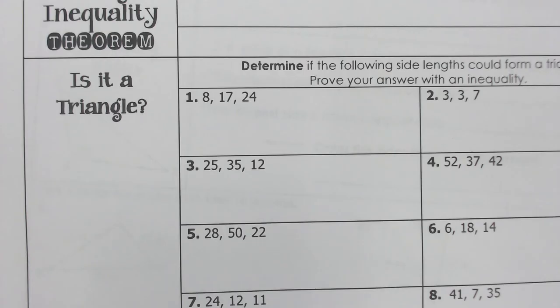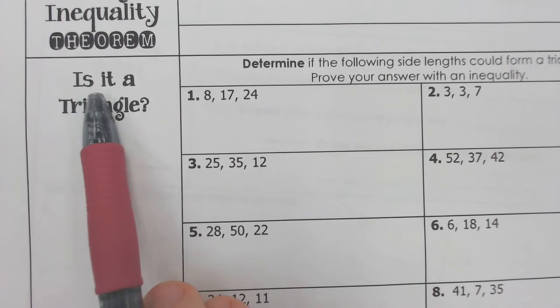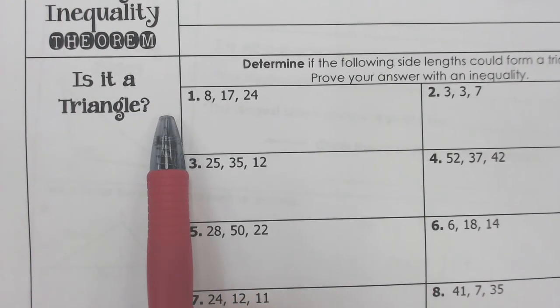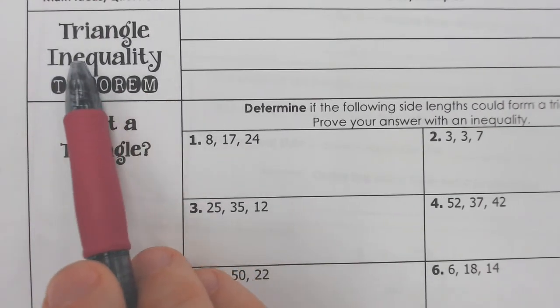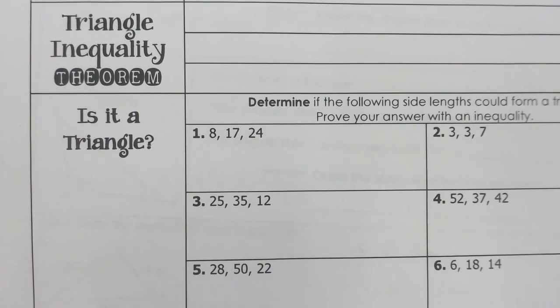So all we have to do is answer a very simple question: is it a triangle? And there is a very simple way in which you can do that, the triangle inequality theorem. And that really just means that if you add up the two shorter sides, it has to be greater than the biggest side.